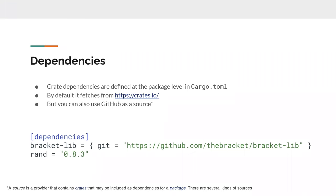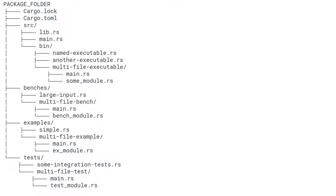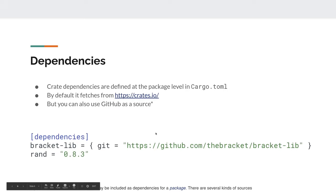Here's a brief overview of what you can put in the package: the lock file, the toml file, then your source. You can have benchmarks, examples, and integration tests. One important thing: in addition to cargo.toml you also have cargo.lock, which you should not git-ignore — it should also be committed.